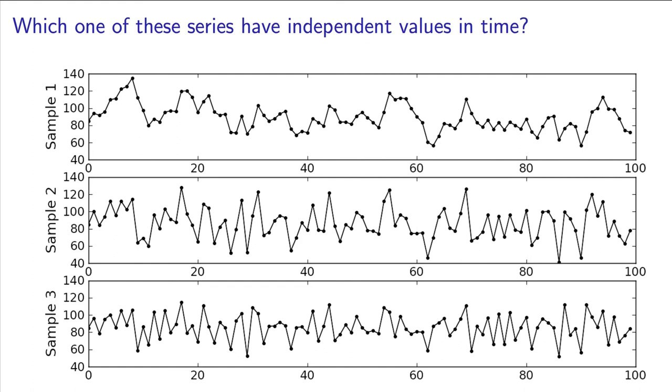The key message here is that you cannot judge independence just by looking at the data. Either we have to test for it, or we have to structure our sampling approach in a way that we ensure we get independent values. By the way, sample 2 was the one that was independent.